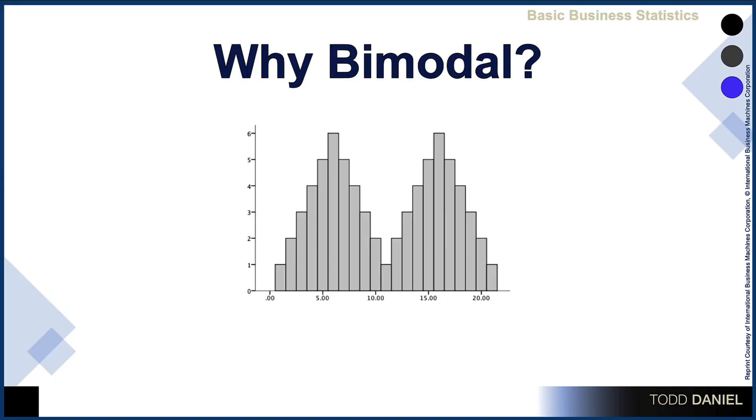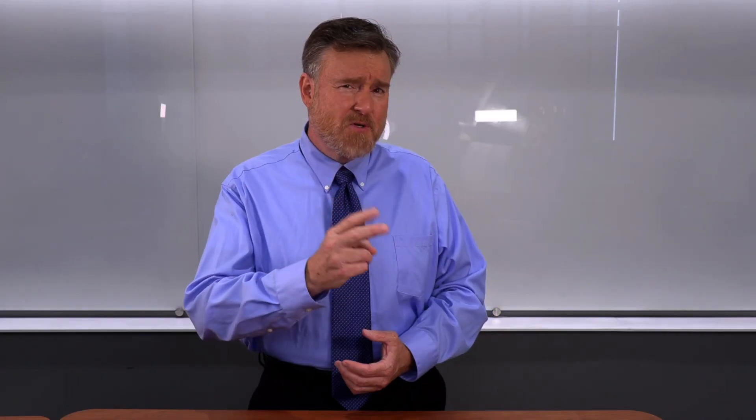Let's talk about that bimodality. You may ask yourself, what would cause a distribution to have more than one mode? There are two reasons why that could occur. It could occur naturally, or it could occur because we have overlapping distributions. Let's take a look at both of these examples.